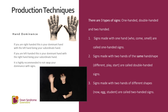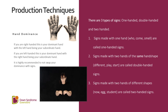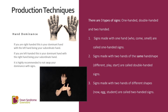Signs made with one hand such as 'who' and 'come' are called one-handed signs. Signs made with two hands of the same hand shape such as 'different', 'play', 'start' are called double-handed signs. Signs made with two hands of a different shape such as 'now', 'egg', 'student' are called two-handed signs.